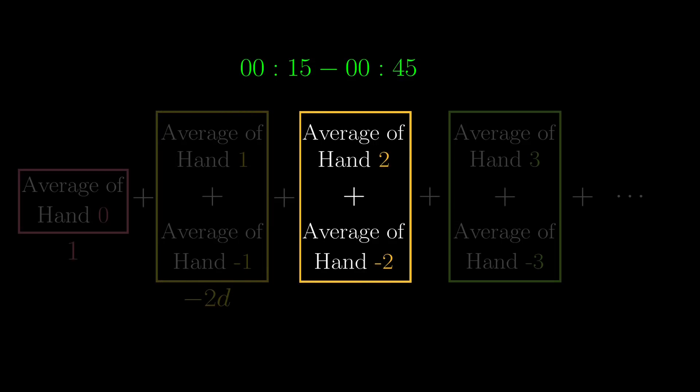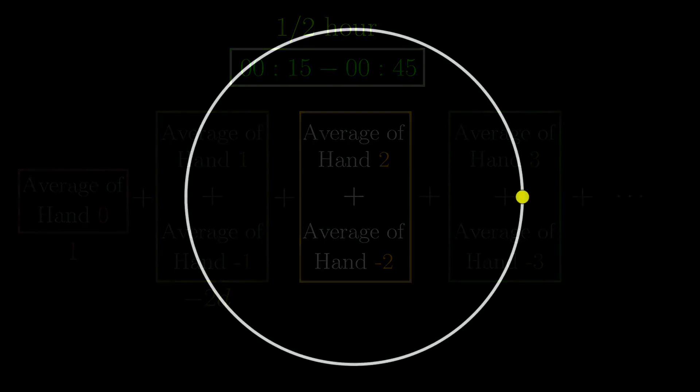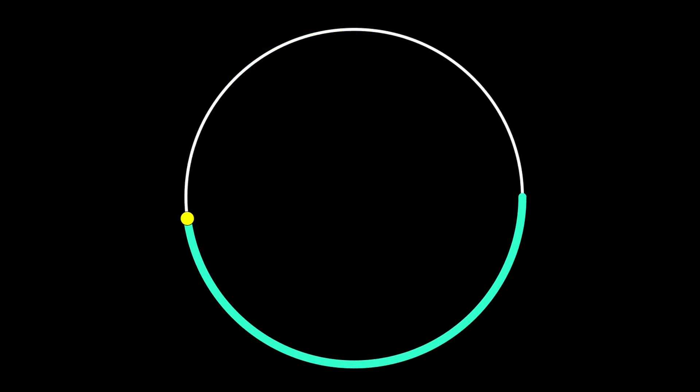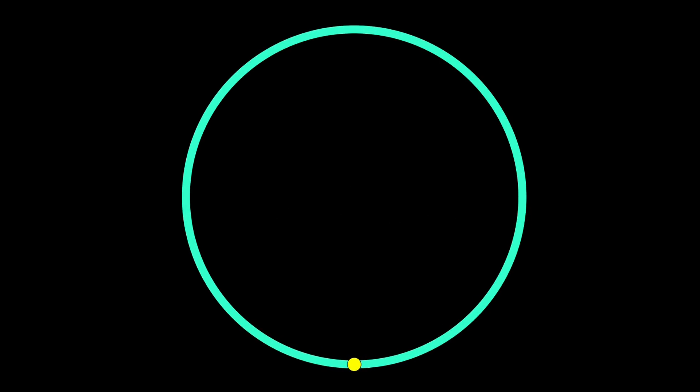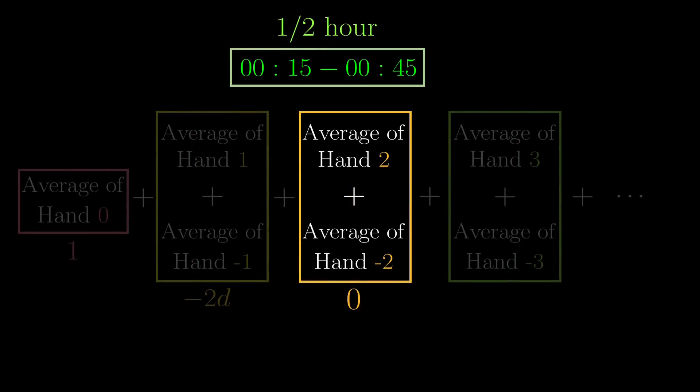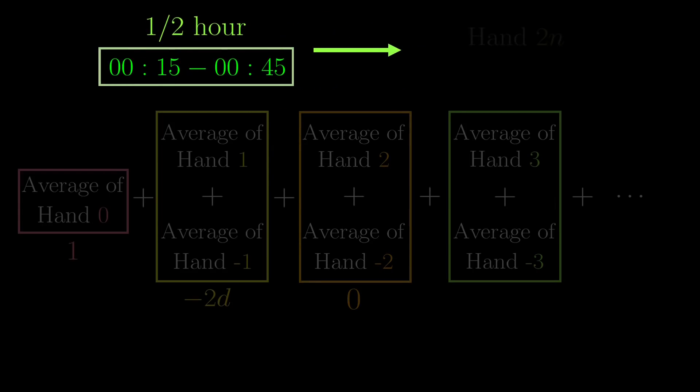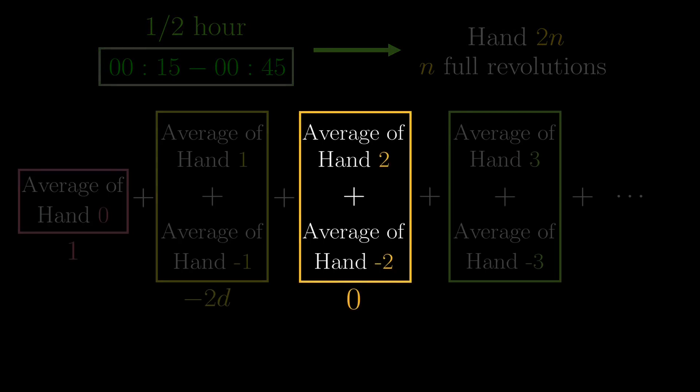Next, we go for hands 2 and negative 2. For this, just note that we are considering a half-hour period, which means that hand number 1 will go halfway around the clock, but because hand number 2 goes twice as fast as hand number 1, it just undergoes a full revolution within that half-hour, and so the average position would be just the centre of the clock. Of course, the same goes for hand negative 2, so altogether, the two hands contribute 0 to the sum. In fact, exactly the same logic goes for any even numbered hands. During the half-hour period, the hand 2n will go n full revolutions around the clock, so by the same argument, all the even hands will contribute 0 to the sum.